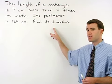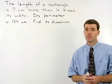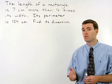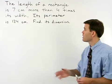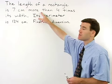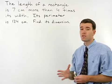Find its dimensions means find its length and width. So our first task in this problem is to set up variables representing length and width, and we do that by using the first sentence. The length of a rectangle is 7 centimeters more than 4 times its width.